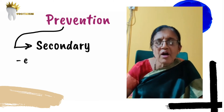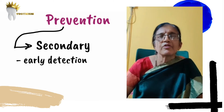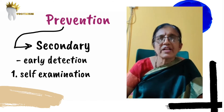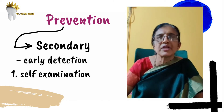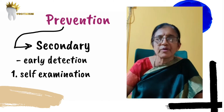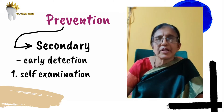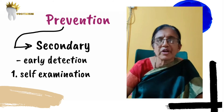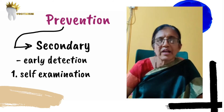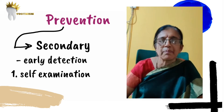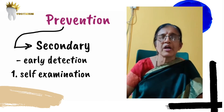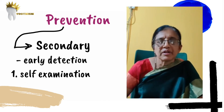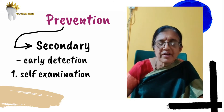Secondary prevention consists of early detection of the lesion. Patients can be educated about self-examination of the mouth — we ask the patient to stand in front of a mirror, completely open the mouth, and look for warning signs such as an ulcer, a white patch, a red patch, sudden pain, bleeding in the gums, or mobility of the teeth. Number one is self-examination.